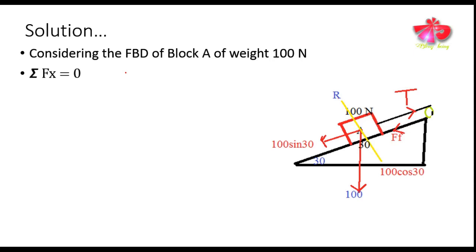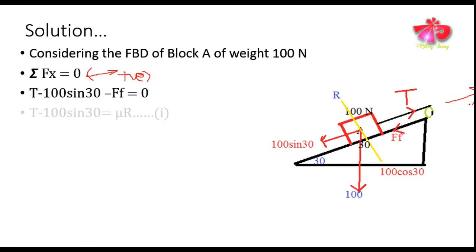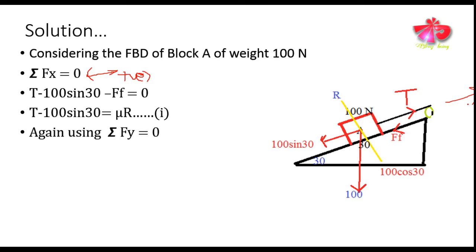Assuming summation of forces in the x-direction equals zero, and considering the direction along tension as positive, we can write the equilibrium condition as: T minus 100 sin 30 degrees minus FF equals zero. We substitute the value of friction force as the coefficient of friction times the normal reaction, and call this equation one.